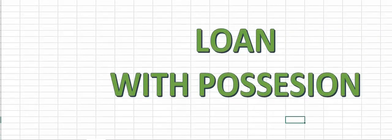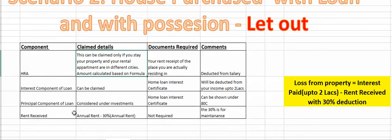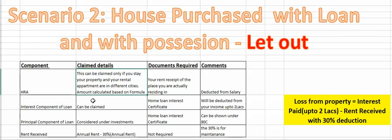The next option is loan with possession. You have taken your loan and you have possession too. In this case there are two sub-cases: either you live there yourself, or you let it out on rent. First, we will see if you have let it out. In this case, you can claim HRA until then, showing that you have given rent, if you are living in a different city. And the interest component is a straight claim, but it is up to a limit of 2 lakhs.